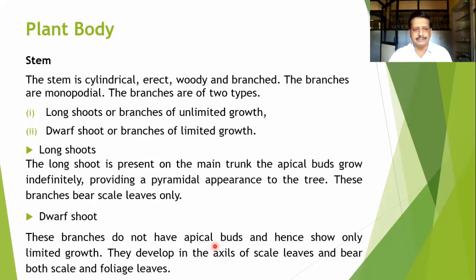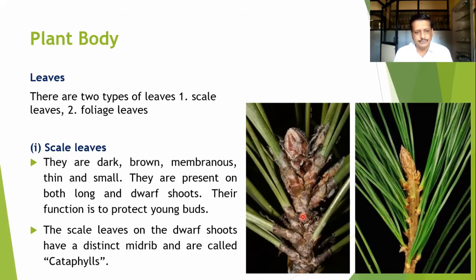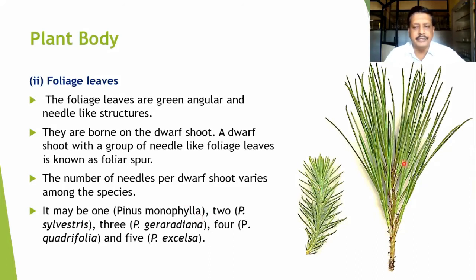Dwarf shoots do not have apical buds and hence show only limited growth. They are developed in the axils of the scale leaves. The basic difference between long shoots and dwarf shoots is that long shoots show unlimited growth, while dwarf shoots show limited growth and bear both scales and foliage leaves. The scaly leaves are slightly brownish in color, while foliage leaves are greenish. These dark brown, membranous, thin, and very small scaly structures are appressed to the stem and present on both long and dwarf shoots.